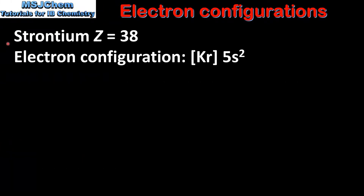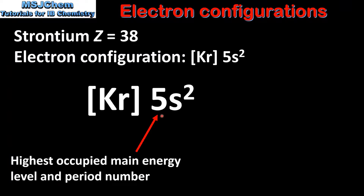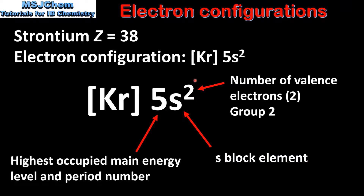The next example is strontium, atomic number 38, electron configuration [Kr] 5s2. The 5 is the highest occupied main energy level and the period number, so strontium is in period 5. The 5s sublevel is being filled, so strontium is an S block element. The 2 is the number of valence electrons, so strontium is in group 2.